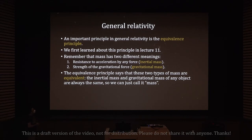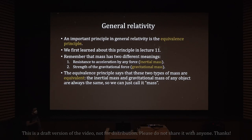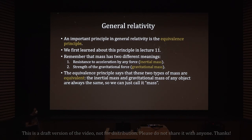An important principle in general relativity is the equivalence principle. Mass has two different meanings: the first is resistance to acceleration by any force, called inertial mass — if your inertial mass is larger, you move less when pushed with the same force. The second meaning is the strength of the gravitational force, called gravitational mass — this tells how much gravity you exert on others and feel from others.